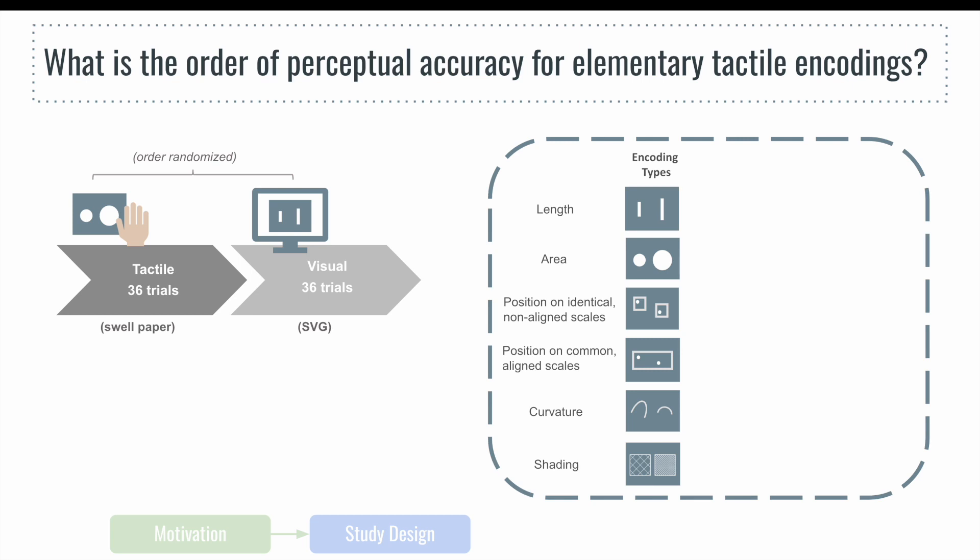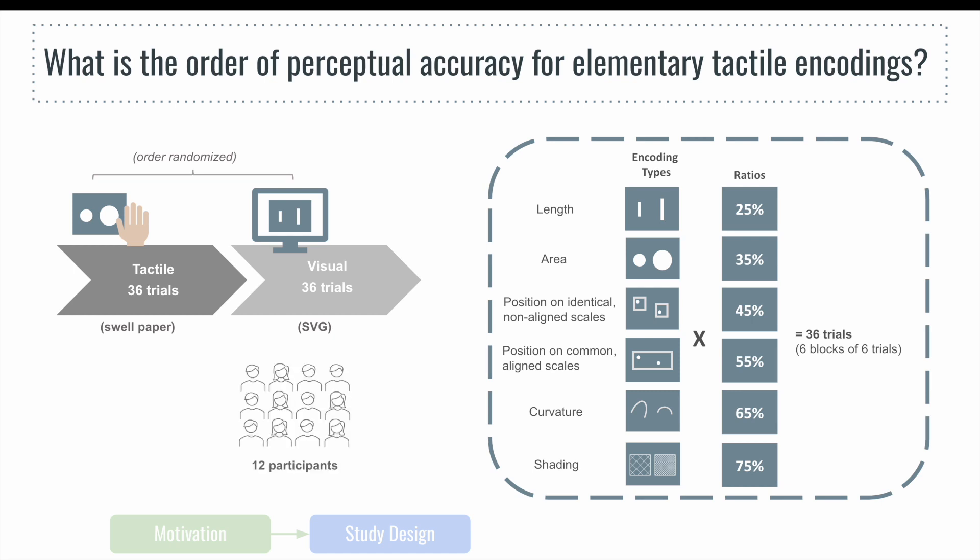For each encoding, we asked participants to compare values for six different proportions ranging from 25 to 75 percent. This resulted in a total of 36 trials per condition. With IRB approval, we recruited 12 undergraduate students and paid them $12 per hour for our one-hour study. Each person was assigned to begin with either tactile or visual encodings with the order counterbalanced. For each trial, we asked participants to identify whether the left or right shape encoded a smaller value and to estimate the proportion of it as compared to the larger using a percentage between 0 and 100.